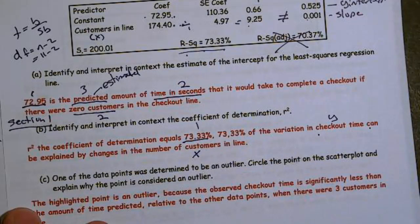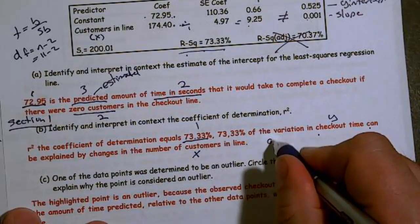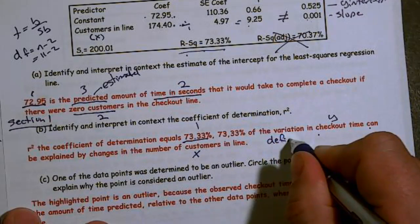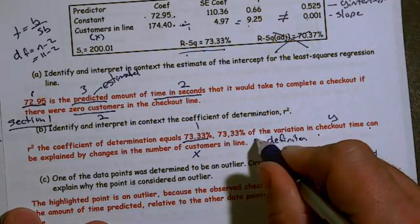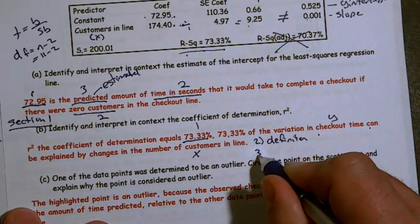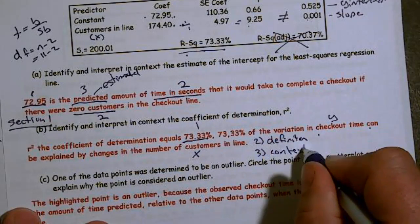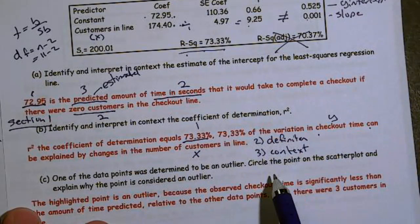So that's essentially my definition, which was the second part, and then it was in context. I had to have all three parts. Two of the three would only give me a partial.